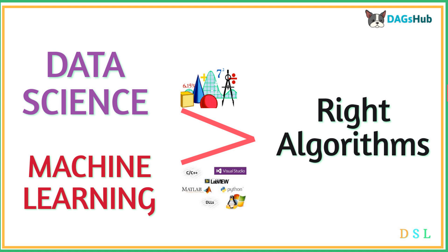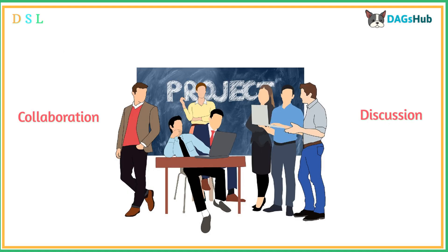Data science and machine learning deal with complex mathematical concepts and programming tools to build the right kind of algorithms for business decisions. Collaborations and discussions, while undertaking and building these projects, can be of great help for data scientists and machine learning practitioners.